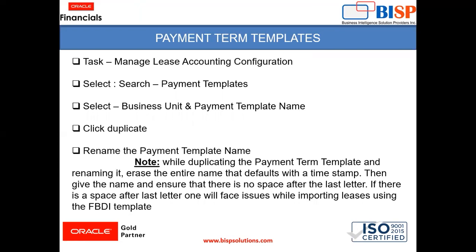While duplicating and renaming, one should keep in mind that we need to erase the entire name that defaults with the timestamp, then give the name and ensure there is no space after the last letter. If there is a space after the last letter, one will face issues while importing leases using the FBDI template, so this should be kept in mind.